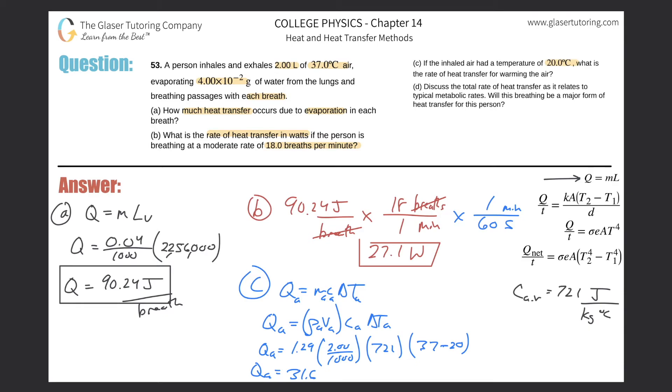This is, sorry, I'm just thinking about, this is going to be rate of heat transfer. This is joules now. So you got to be careful here. What did we calculate? Well, we calculated the energy. But this is the energy per breath. Because they say a person inhales and exhales 2 liters each breath. So this is basically this amount of energy per breath.